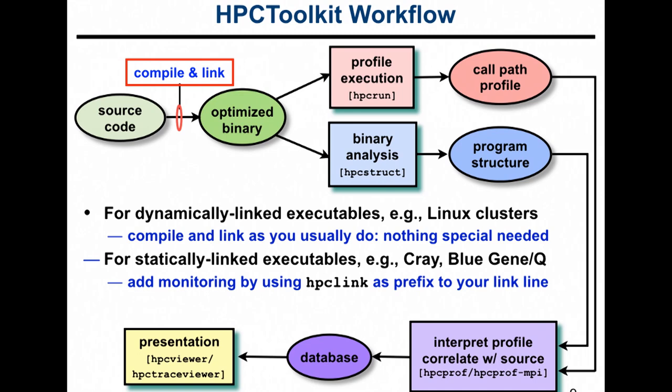Here's the workflow schematic. First, you compile and link. For dynamically linked executables on Linux clusters, you don't do anything — just use your makefiles as they are. On Cray and BlueGene systems with static linking, you add our HPC link command as a prefix to your link line, which injects our monitoring library into the statically linked execution.